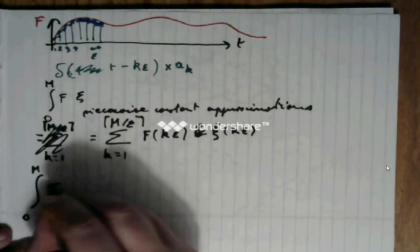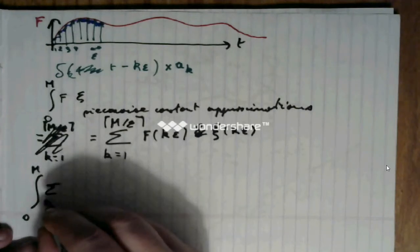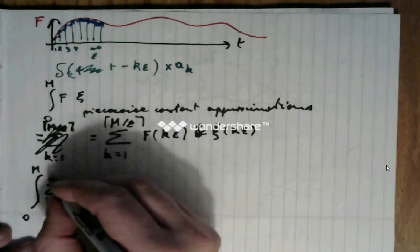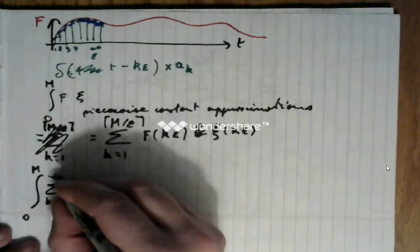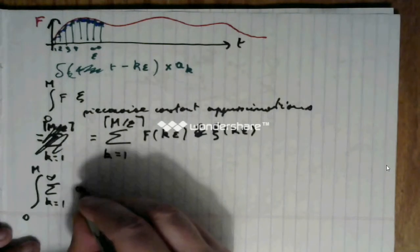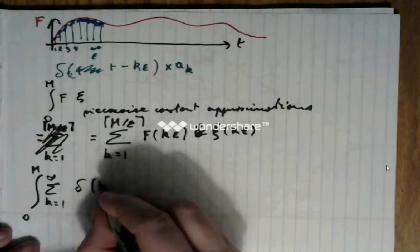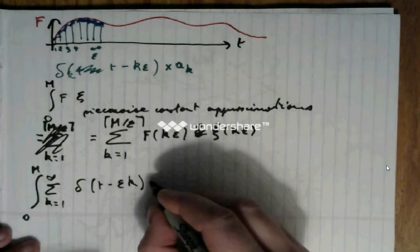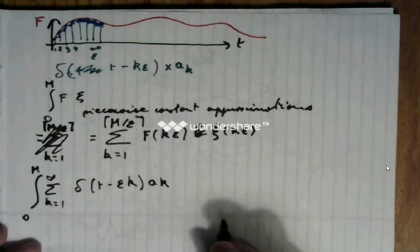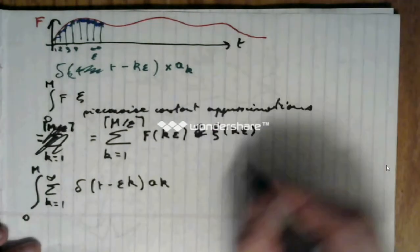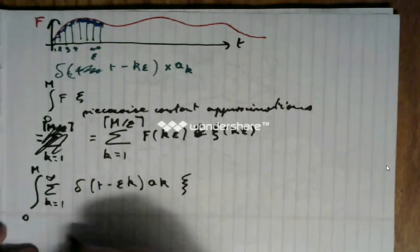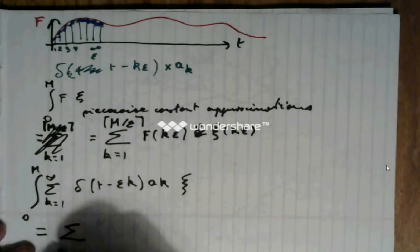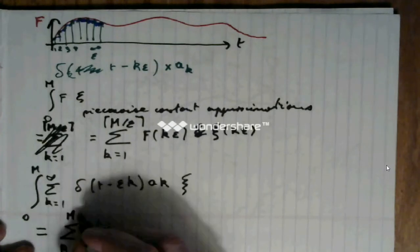The integral from 0 to m of these little deltas, the sum from k equals 1 to some big number. Let's say if it goes to infinity. Of delta of t minus k epsilon times my famous ak, times xi.